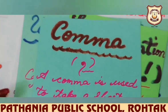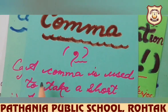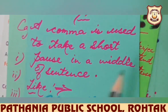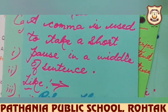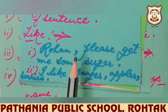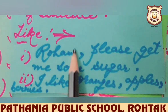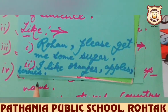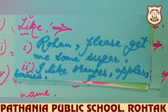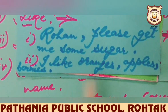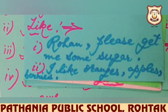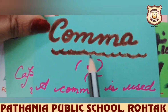Our next punctuation mark is comma. A comma is used to take a short pause — where we want to stop for a moment in the middle of a sentence. For example, 'Rohan, please get me some sugar.' After taking the name of a person, we use a comma. We also use a comma when many things of the same kind are listed: 'I like oranges, apples, berries.' This is the sign of comma.